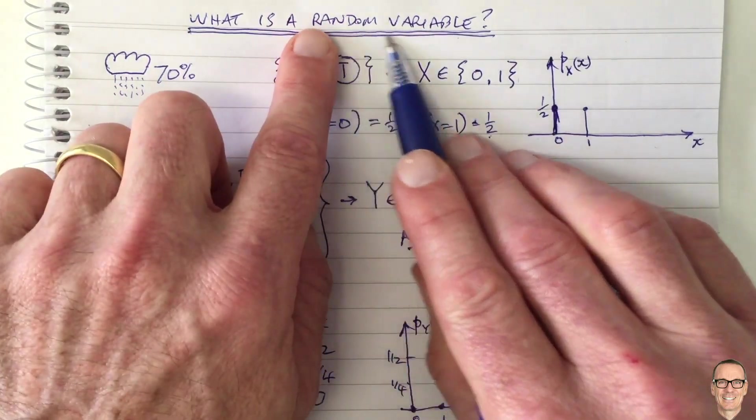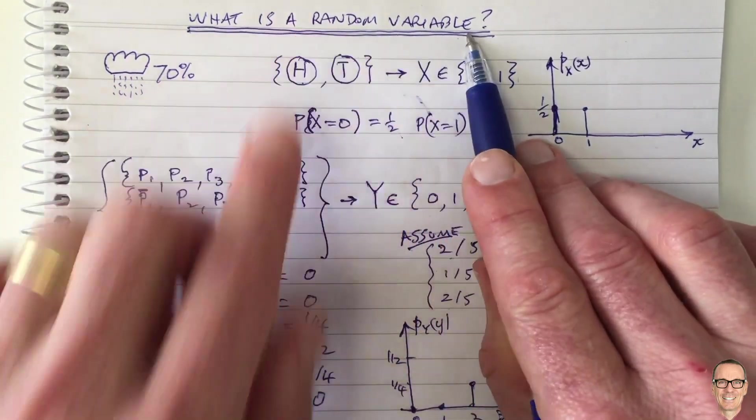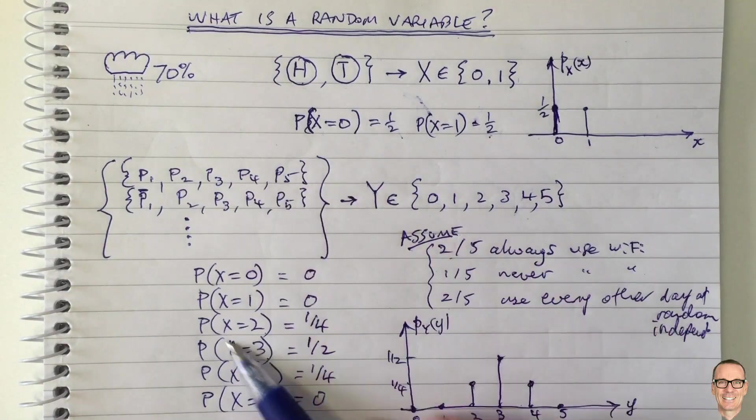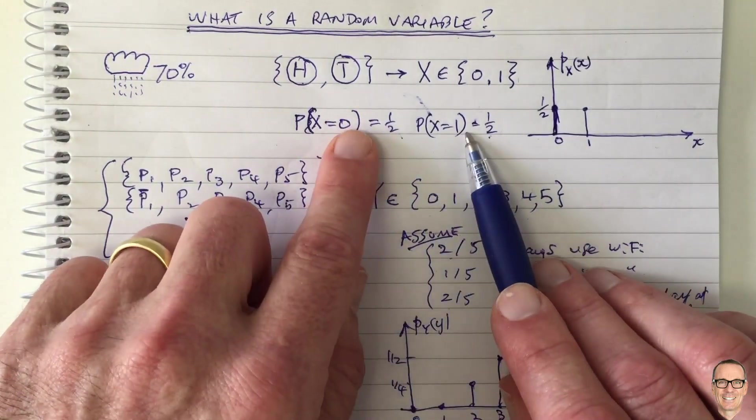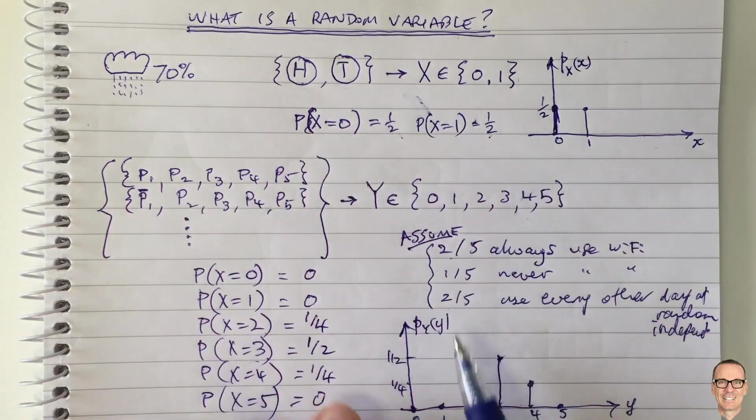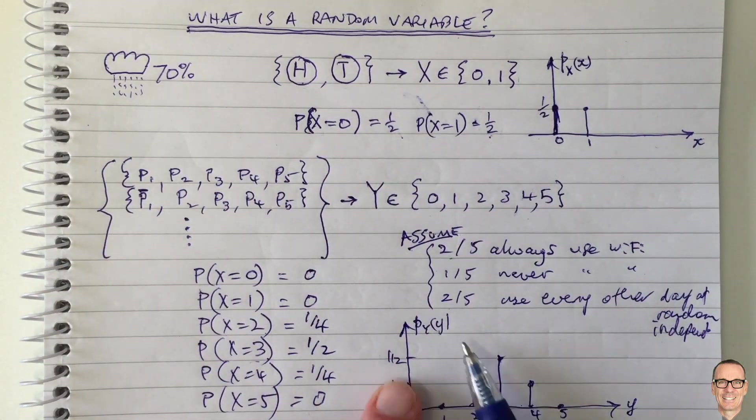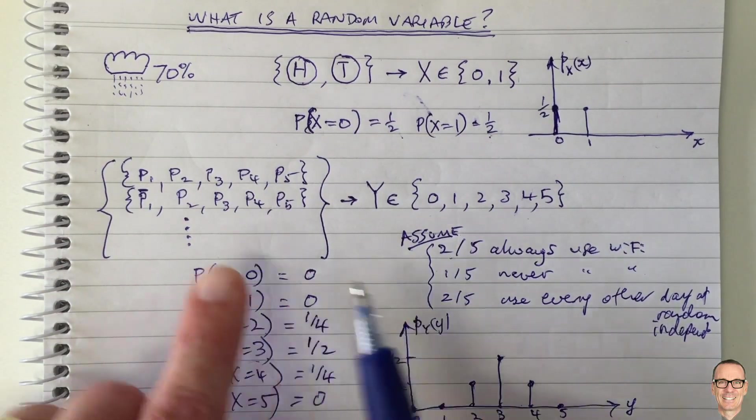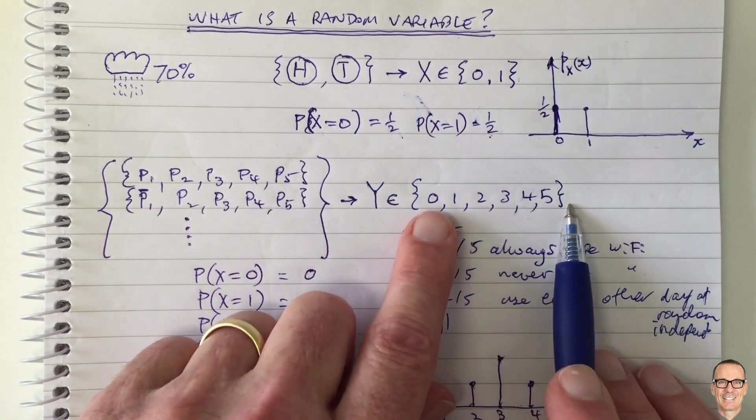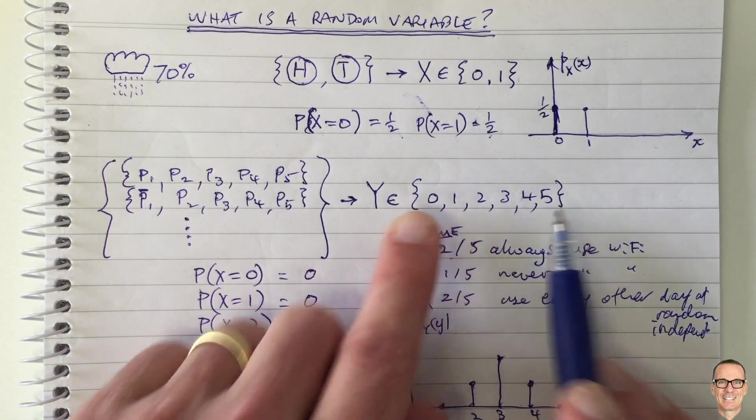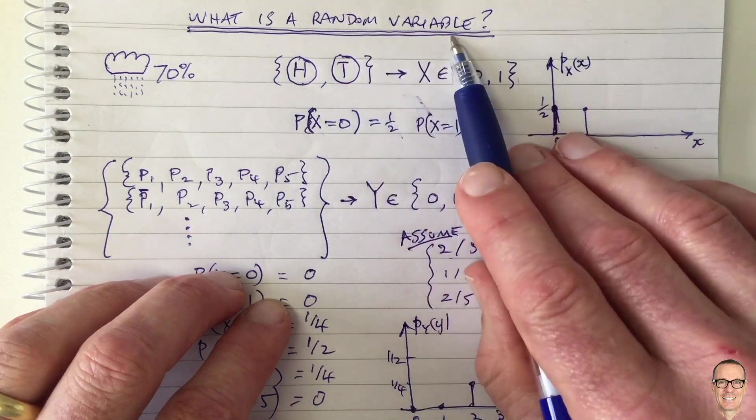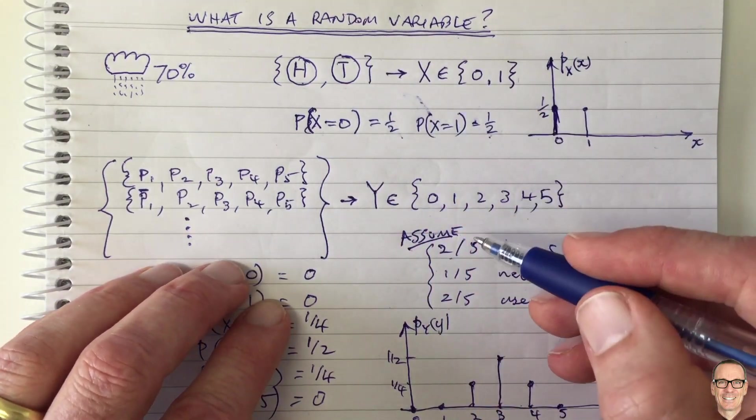That's actually one of the complexities of working with random variables in these more complicated systems where it's not just modeled exactly as physics, and you have to think about how to model the probabilities which are mapping from the space to the real numbers. So hopefully this has given you more insights into random variables.